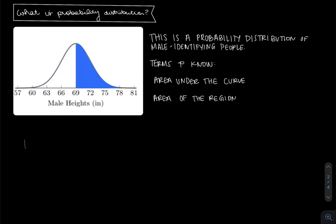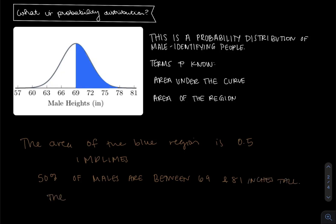If we wanted to answer the question or statement that the area of the blue region is actually 0.5, that means it's the same as—or implies—that 50% of males are between 69 and 81 inches tall. So the probability of selecting, and it's implied at random, a male between 69 and 81 inches tall is 50%. So a probability distribution legitimately gives you probabilities of the particular example.